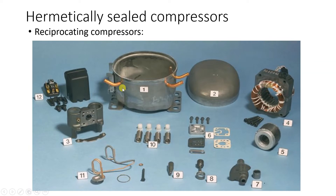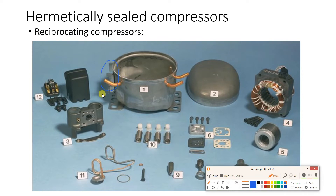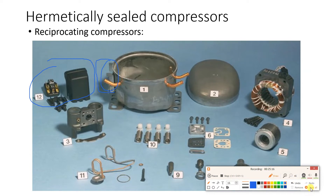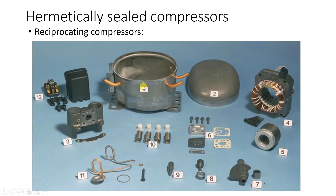The components of the hermetically sealed compressor numbered are: the outer shell (welded), three copper tubes (suction, discharge, charging), electrical terminals, the cylinder, motor stator coil, rotor, cylinder head with gasket, crankshaft, connecting rod and piston, oil pickup tube, four springs (for vibration isolation), and internal discharge tube. Externally on the shell there are usually a relay and overload protector.